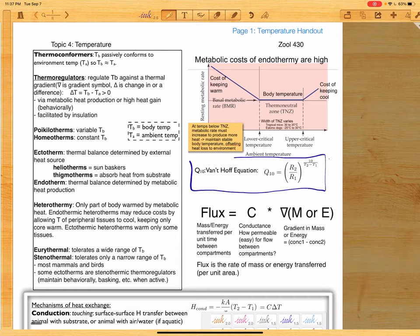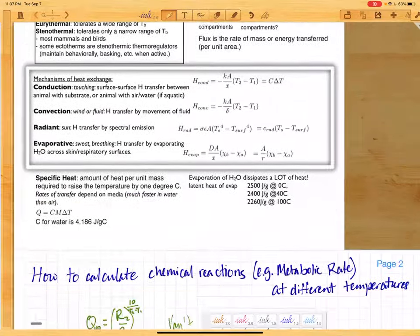And what it describes is how much the rates change. If you know a rate at a particular temperature and you want to know what the rate is at a different temperature, and you know what the Q10 constant is, then you can actually figure out what that would be. So I'll show you how it works.